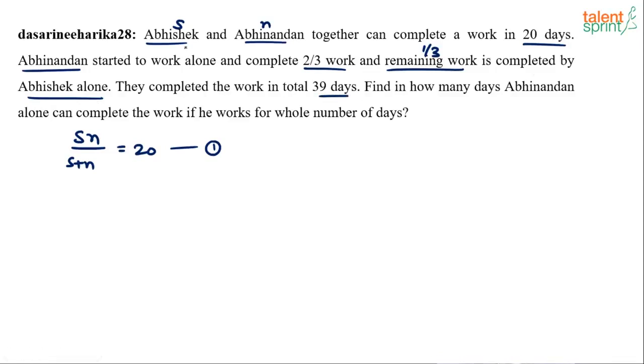See, try and understand. Abhinandan will do the total work in N days. So to do two thirds of the work he will take 2 by 3 N days. For total work he takes N days, so for two thirds of the work he will take 2 by 3 N days. And the remaining work, one third of the work, was done by Abhishek who usually takes S days. So to do one third of the work he will take S by 3 days. This is equal to 39 days. This is equation number two.